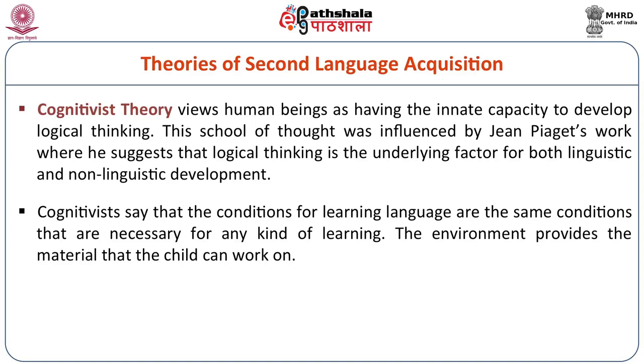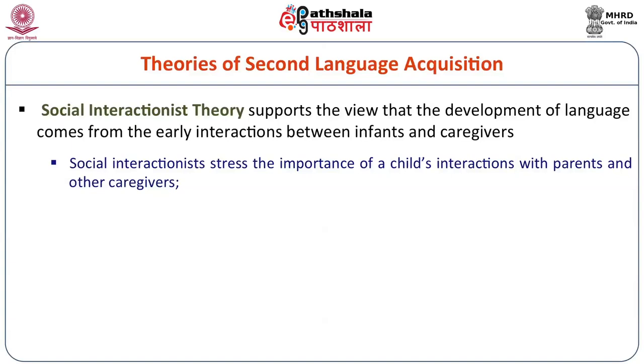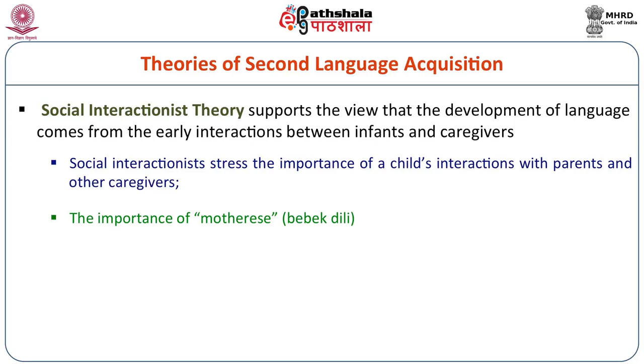The cognitive theory views human beings as having the innate capacity to develop logical thinking. Influenced by Piaget's work, it suggests logical thinking is the underlying factor for both linguistic and non-linguistic development. Cognitivists say the conditions for learning language are the same as for any kind of learning — the environment provides the material the child can work on. Social interactionist theory supports the view that the development of language comes from early interactions between infants and caregivers, stressing the importance of a child's interaction with parents and caregivers, mother-ese, context, word knowledge, goals, and social interactions.